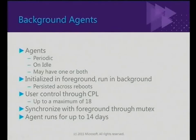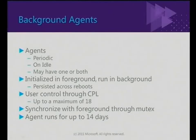With background agents, you've got two types: a periodic agent and an on-idle agent. With the periodic agent, you get 25 seconds to do whatever you want before we stop it again — 25 seconds every 10 minutes. If you're after GPS or the location of the phone, we won't start your timer until the GPS is warmed up or there's a value in memory ready for you.